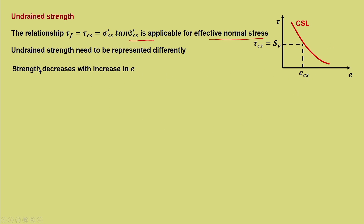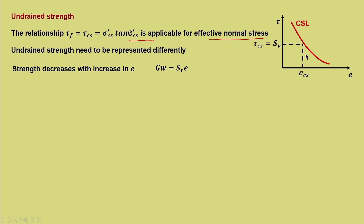As void ratio e increases, S_U decreases. Since G·w = S_r·e and for saturated soil G is constant, as e increases w increases. So with increasing water content, S_U decreases — strength is thereby related to water content W as well. Undrained shear strength is highly sensitive to initial condition in terms of e or W, and S_U refers to strength when soil is sheared without change in W — a constant drainage condition, so e also remains constant.